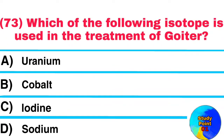Question No. 73. Which of the following isotope is used in the treatment of Goiter? Answer: Iodine.